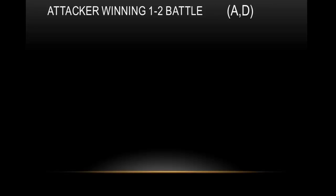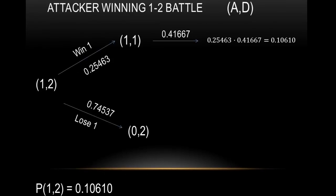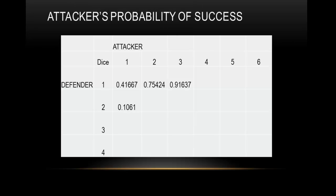A one-on-two battle: the attacker is attacking with one die, but the defender has two dice — two armies. You can win one, reducing the defender's army by one, leaving a one-on-one battle. Or you can lose one, with a probability of 0.74537. If you lose, you have no more armies and the battle is over. But if you win that first round, we already know the probability of winning the resulting one-on-one battle, so we multiply those two together and get 0.10610. The probability of winning a one-on-two battle is very small — about 10%. We toss that in the table.